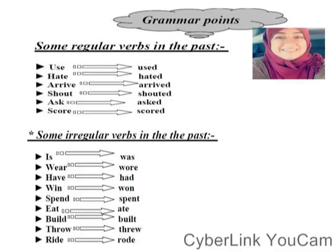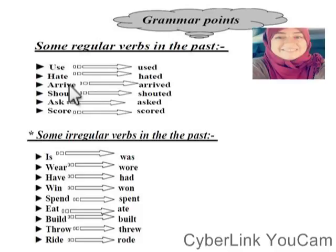Let's move to the grammar. Grammar points. Here we have some regular verbs in the past — بعض من الأفعال المنتظمة في تصرفها في الماضي. Use → Used, Hate → Hated, Arrive → Arrived, Shout → Shouted, Ask → Asked, Score → Scored. These are regular verbs — they conjugate very easily in the past, no problem with them.